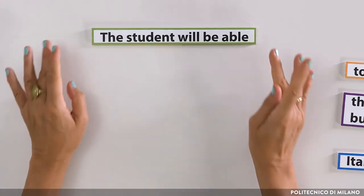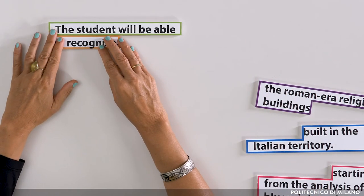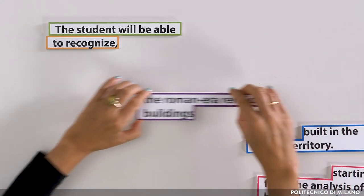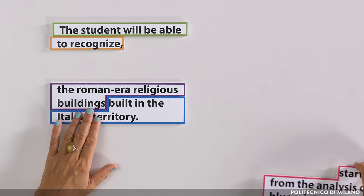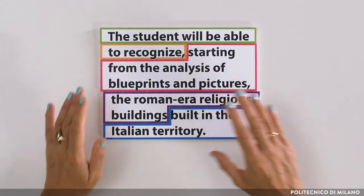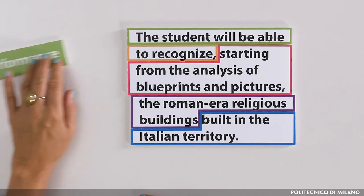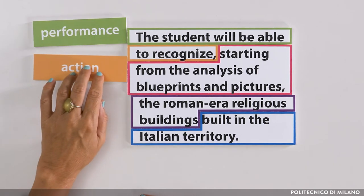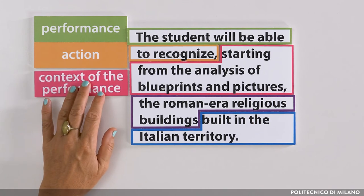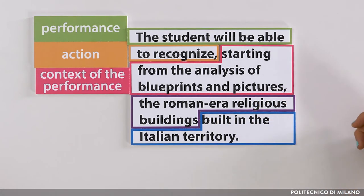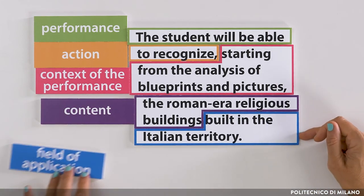To help us formulate the Intended Learning Outcomes in terms of performance, we can use the start-up formula: the student will be able to. Afterwards, we can add a verb — the action we expect the student to complete — and the object. Then we can further specify the Intended Learning Outcomes, also giving information on the field of application and on the context of the performance expected from the student. For example: the student will be able to recognize, starting from the analysis of blueprints and pictures, the Roman-era religious buildings built in the Italian territory.